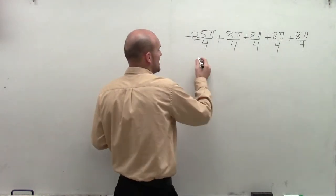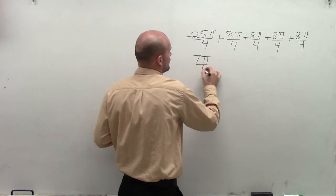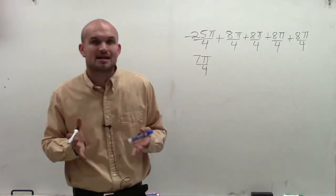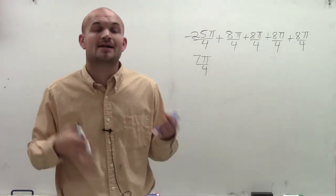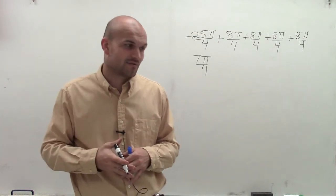So therefore, if I keep on adding 2 pi, I get 7 pi over 4. Now, the important thing to understand about 7 pi over 4 is it's an angle between 0 and 2 pi. Therefore, I can find the reference angle of that angle.